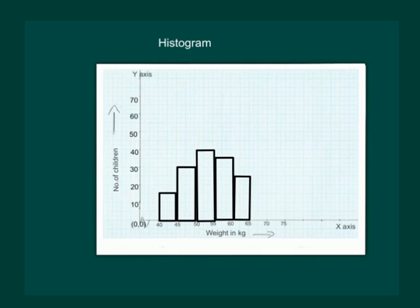Similarly for the weights from 45 to 50 kg we have number of children 30, so we mark 30 line and complete the rectangle, and so on.